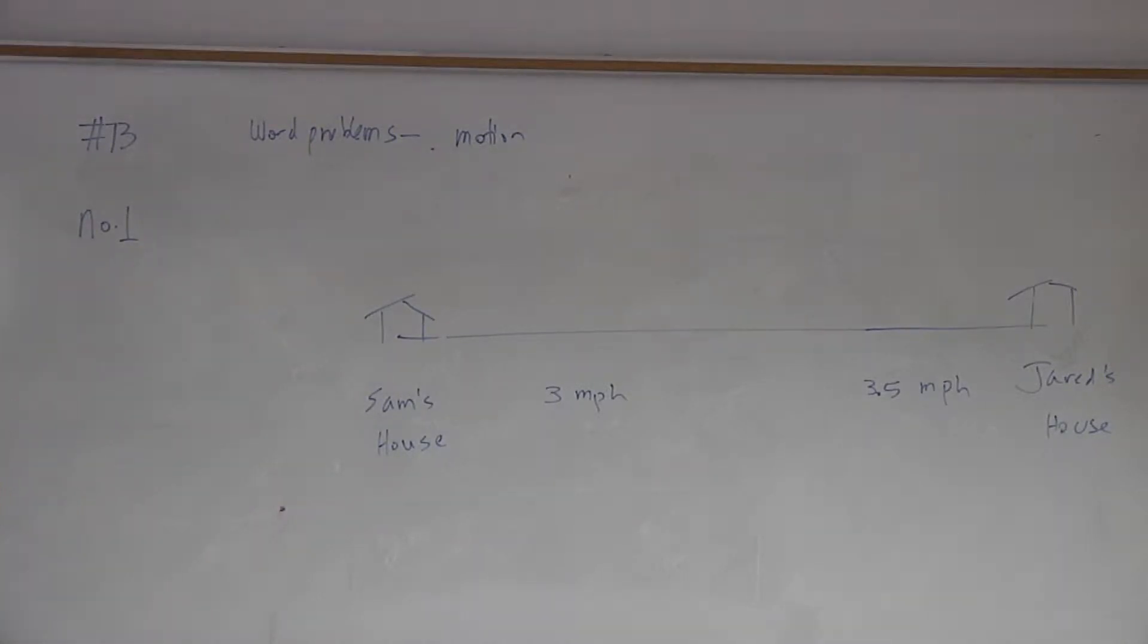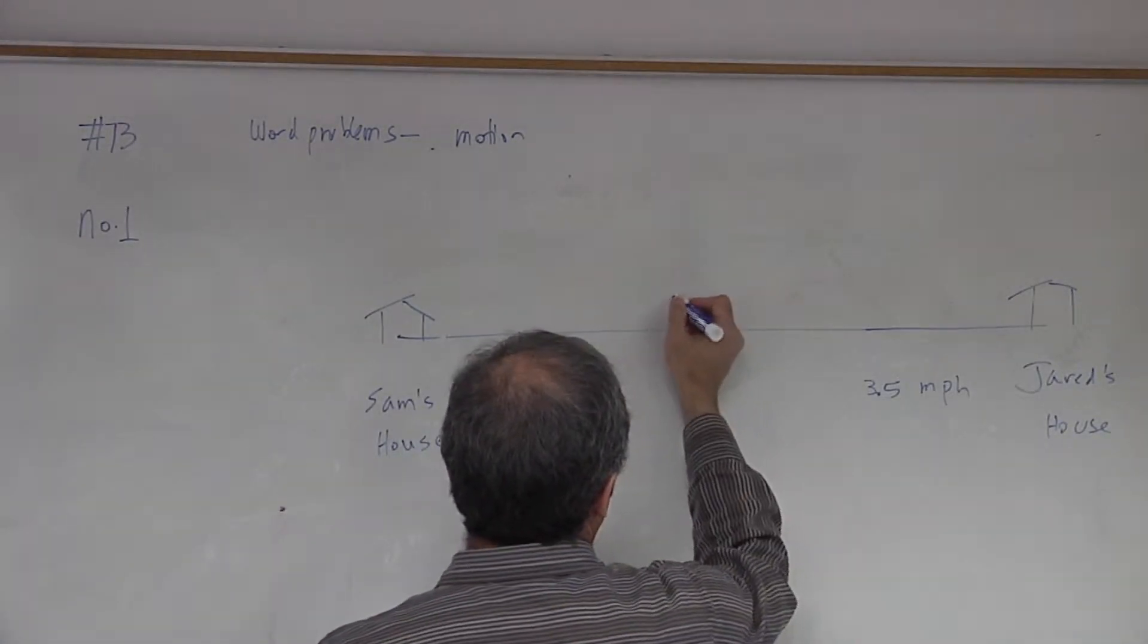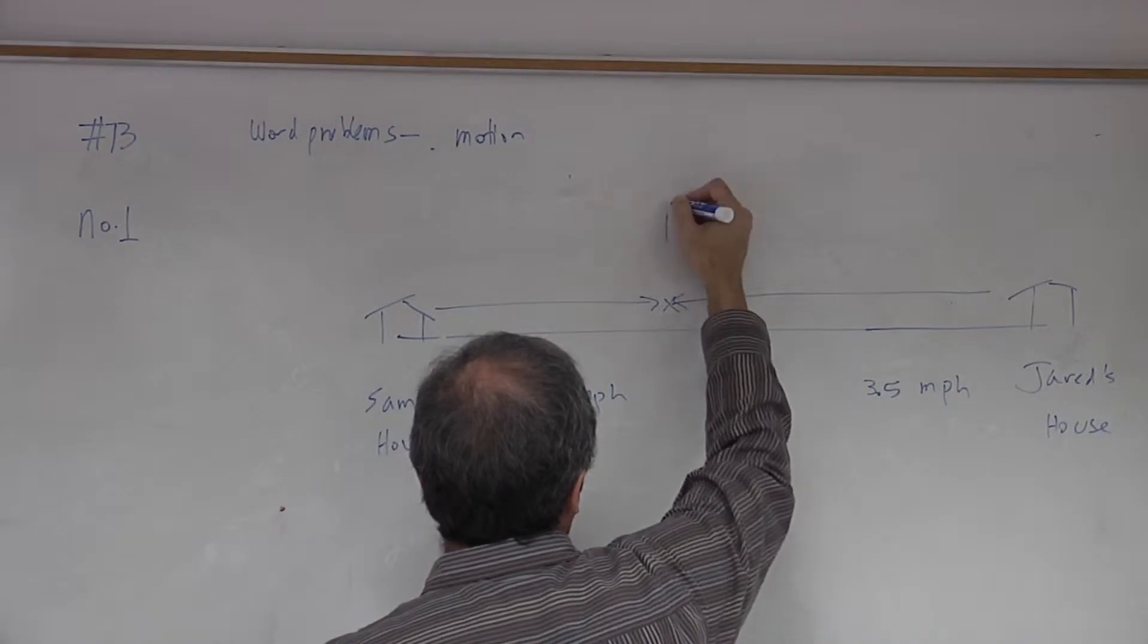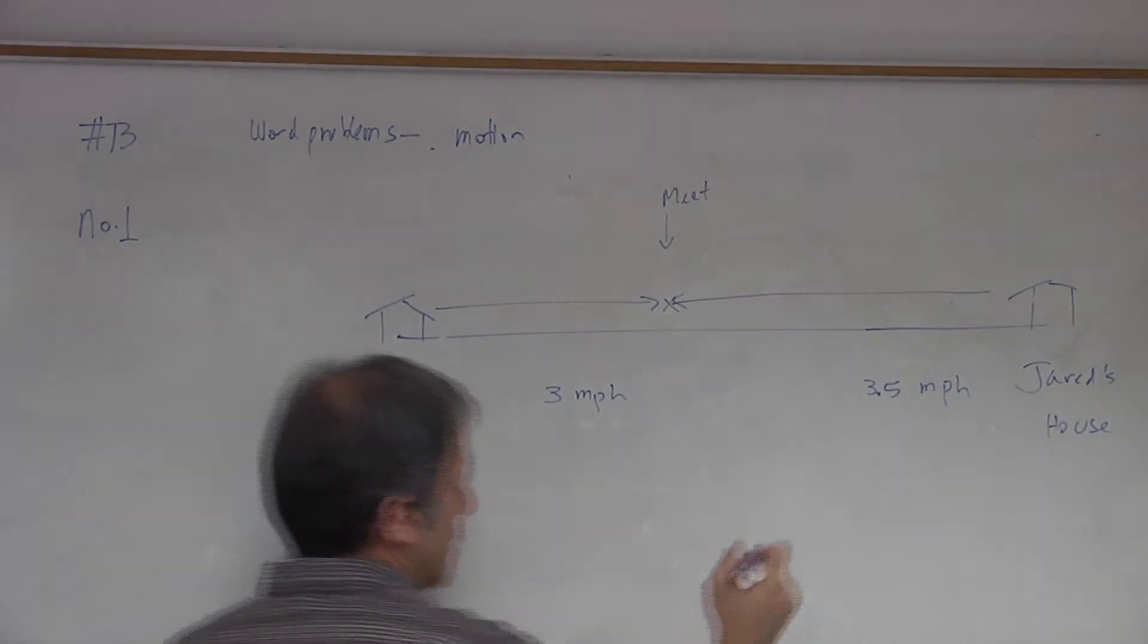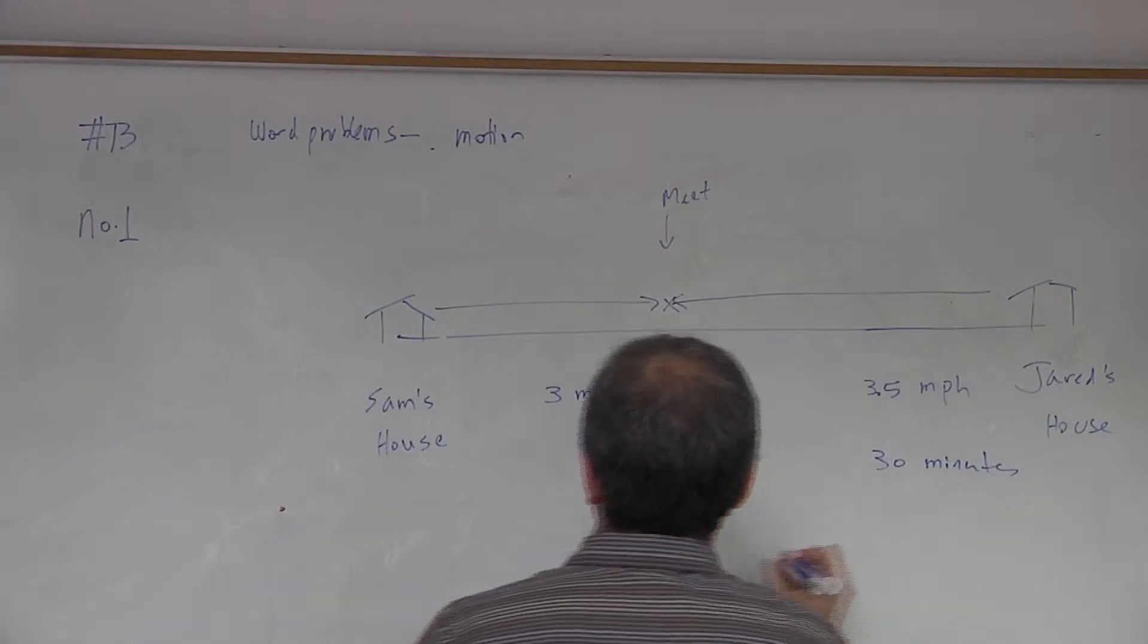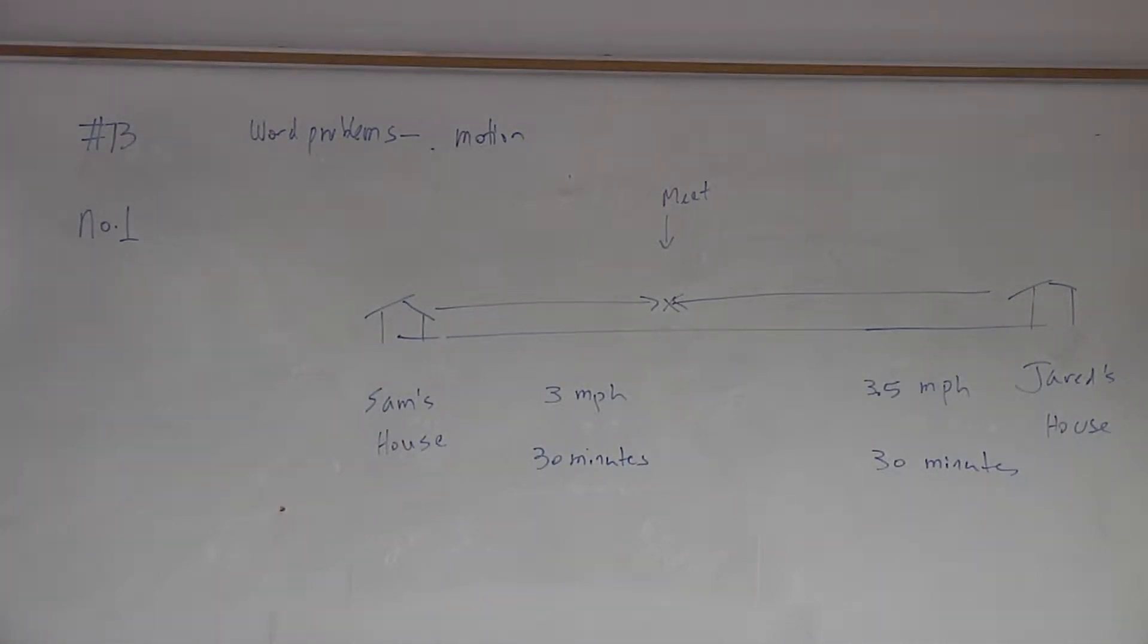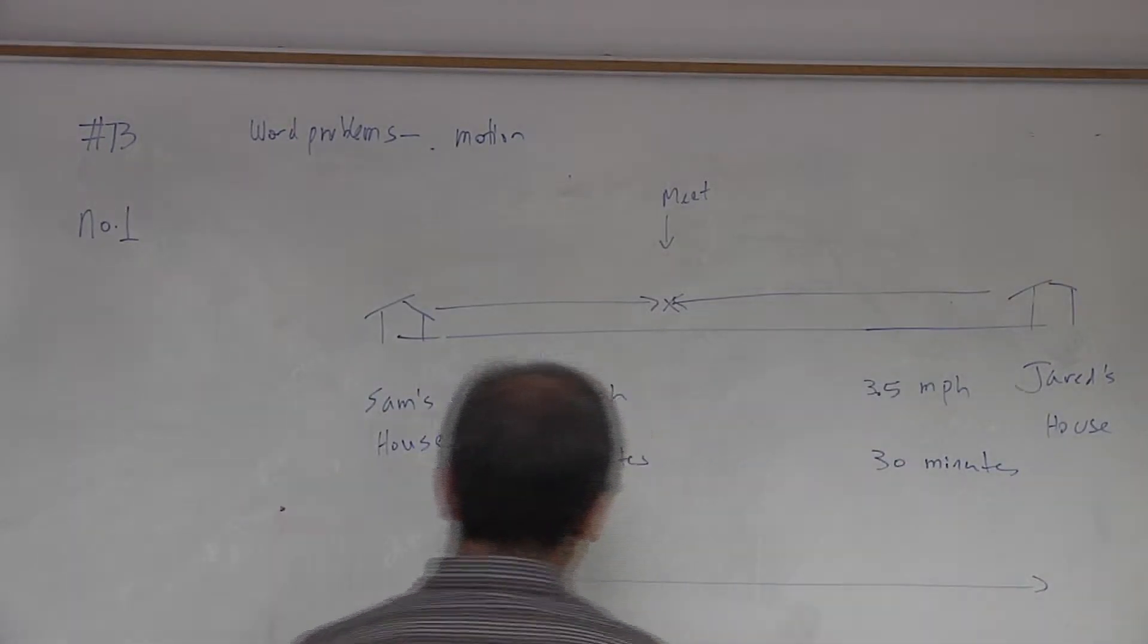So they walk towards each other's homes and at some point they meet after 30 minutes. Let's just pick a place where they meet - let's say that's the point where they end up meeting each other. So this is where they meet, 30 minutes later. Same amount of time - it's important to remember that time was the same for both of them. The question here is how far apart do they live from each other, in other words we want to know what this distance is equal to.